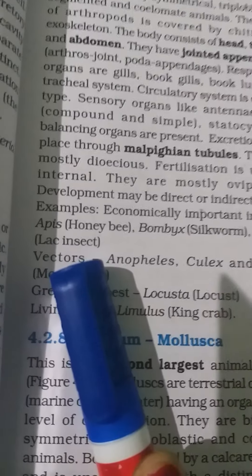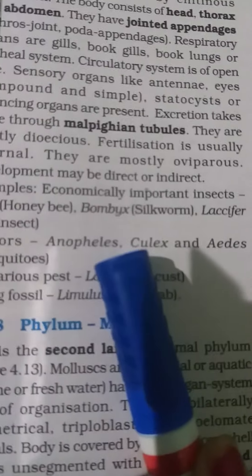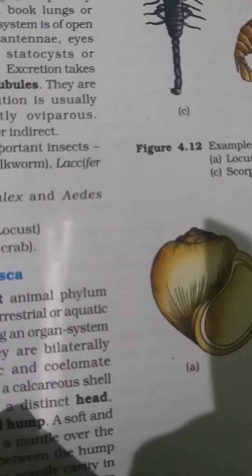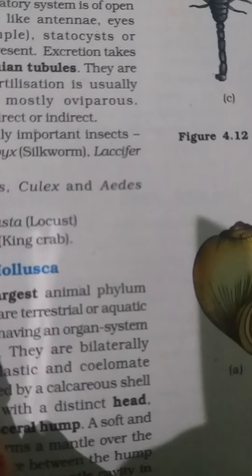Examples of arthropods include Apis (honeybee), Bombyx mori (silkworm), Laccifer (lac insects).